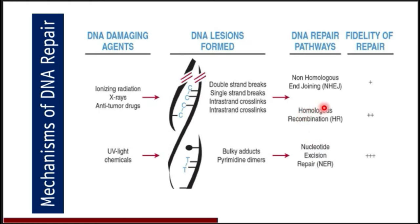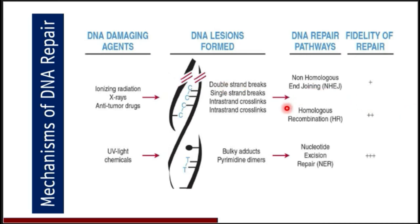Another likely MCQ: which of the four DNA repair pathways is best for damages caused by ionizing radiation and X-rays? The answer is homologous recombination repair.